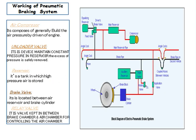Working of the pneumatic braking system. Air compressor: its components generally build air pressure driven by the engine. Unloader valve: it is the main device that maintains constant pressure in the reservoir; excess pressure is safely removed. Reservoir: it is a tank in which high pressure air is stored. Brake valve: it is located between the air reservoir and the brake selector. Relay valve: it is a valve kept between the brake chamber and air chamber for controlling the air flow.